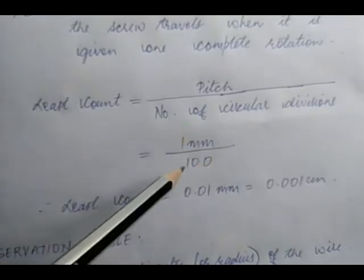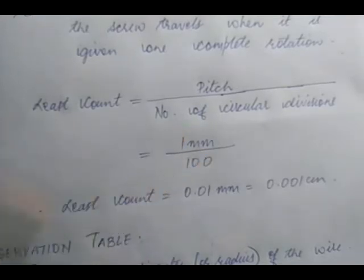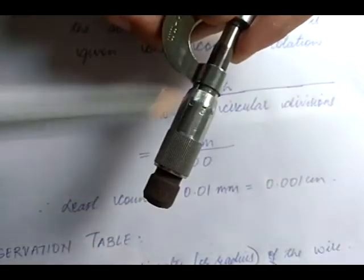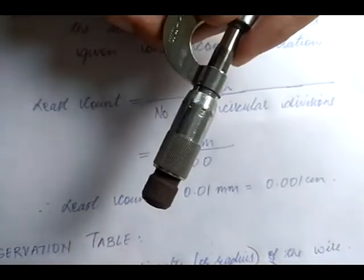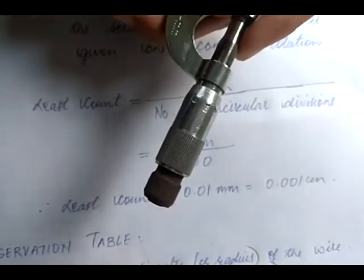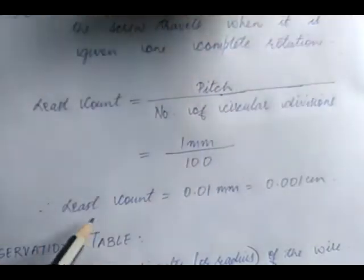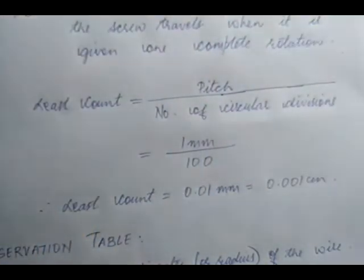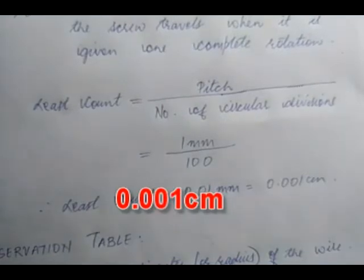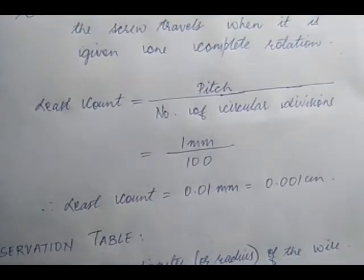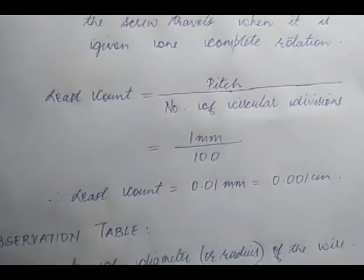Pitch divided by the number of circular divisions gives the least count — the smallest length the instrument can measure. This equals 1 mm ÷ 100 = 0.01 mm, or equivalently 0.001 centimeters.